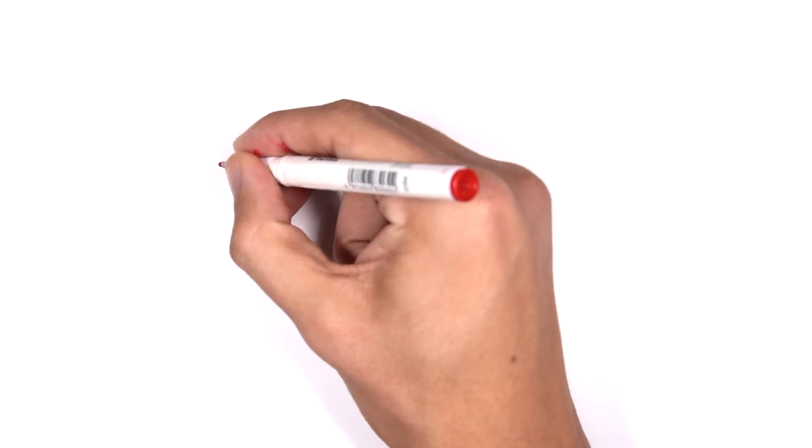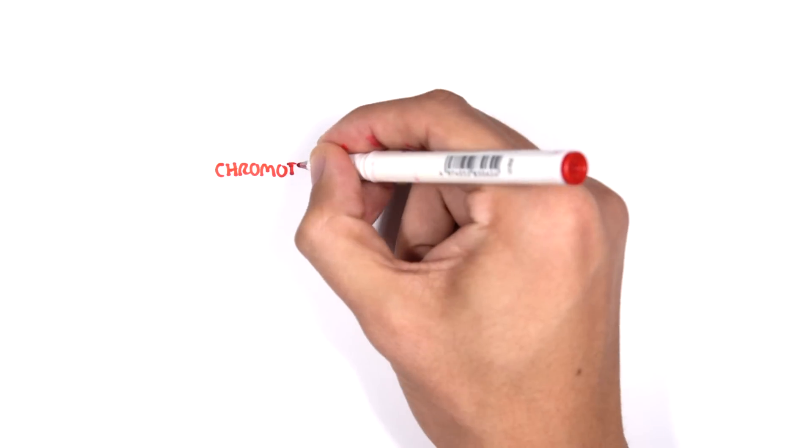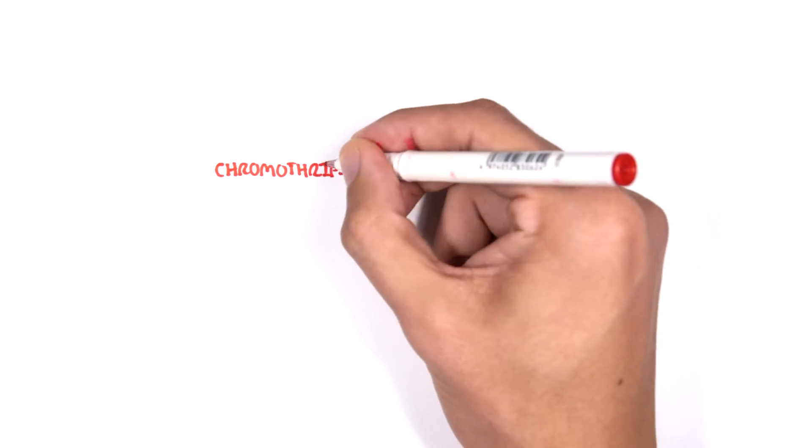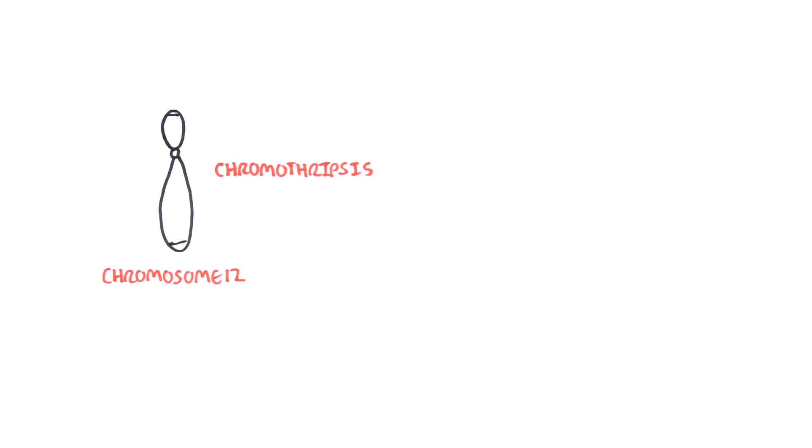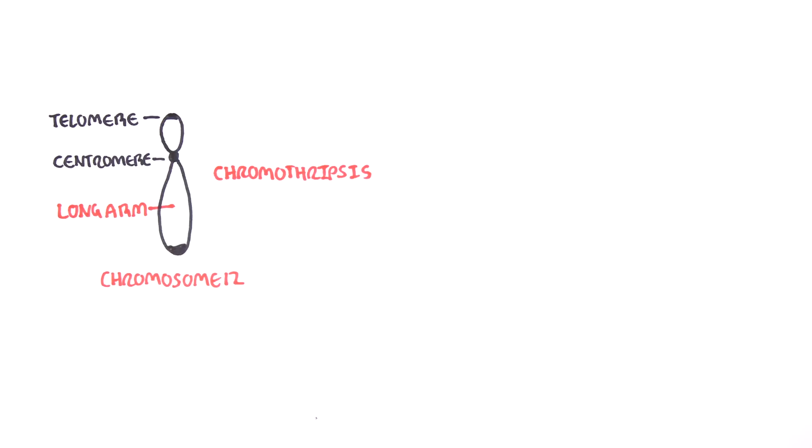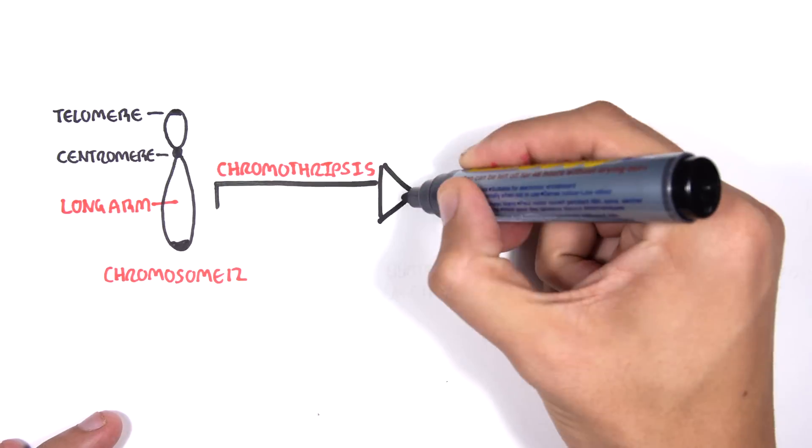So how do they arise? They all appear to start with a catastrophic event known as chromothripsis, which literally means shattering of a chromosome. In the case of liposarcomas, the long arm of chromosome 12 shatters.